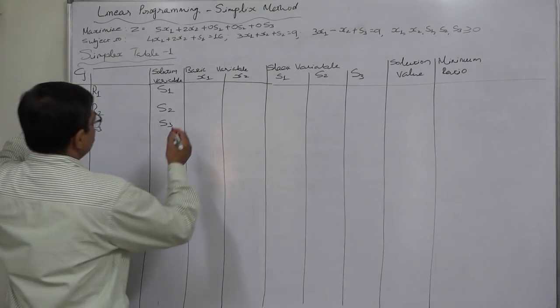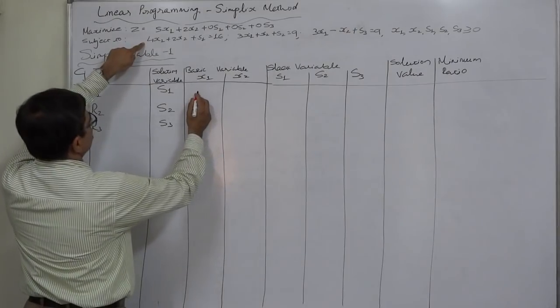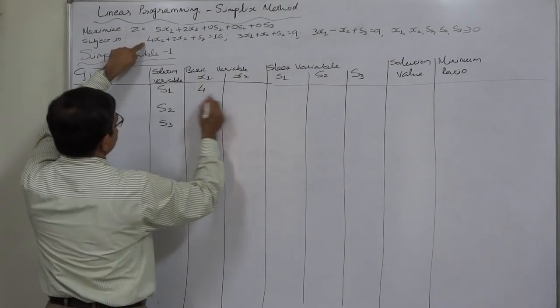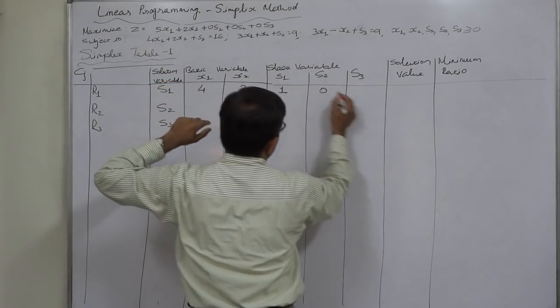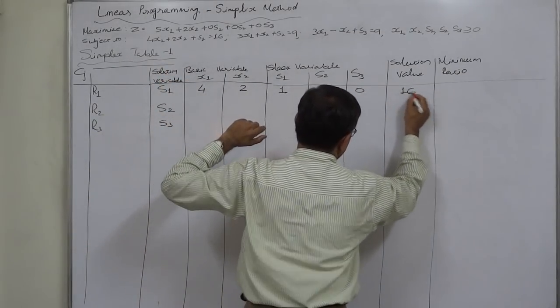The coefficients in first constraint is 4 for X1, 2 for X2, 1 for S1, 0 for S2 and 0 for S3, solution value 16.